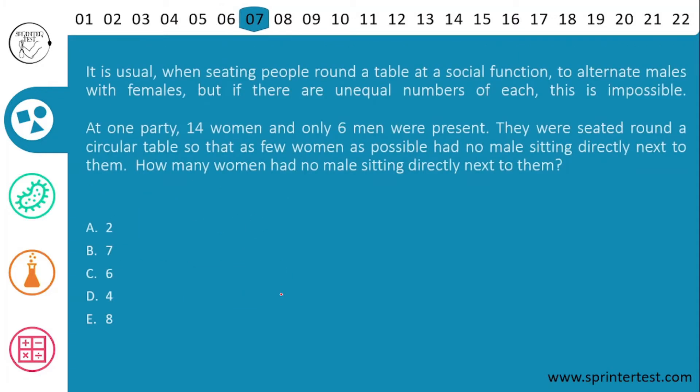Moving to the seventh question. It is usual when seating people round a table at a social function to alternate males with females, but if there are unequal numbers of each, this is impossible. At one party, 14 women and only 6 men were present. They were seated round a circular table so that as few women as possible had no males sitting directly next to them. How many women had no males sitting directly next to them?